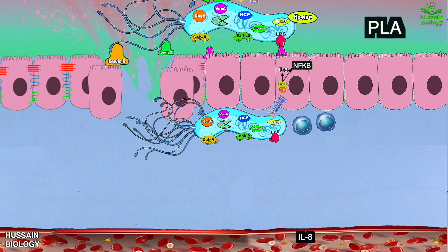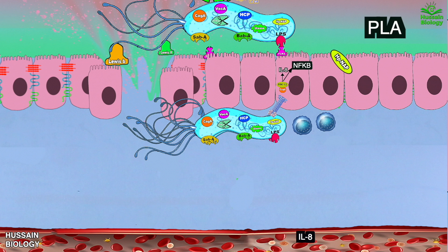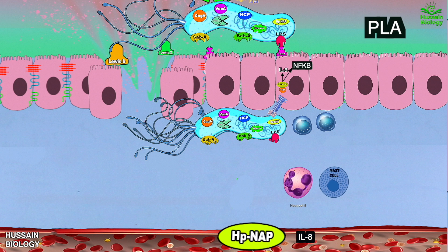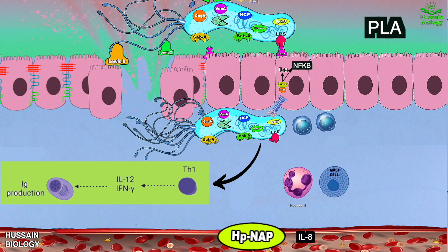Moving towards another factor: Helicobacter pylori secretes HpNAP — helicobacter pylori neutrophil-activating protein. It crosses the epithelium and recruits and activates neutrophils and mast cells. It also drives a Th1 immune response which releases pro-inflammatory cytokines like TNF-alpha, interleukin-6, interleukin-12, and interleukin-23.